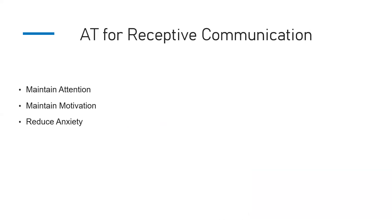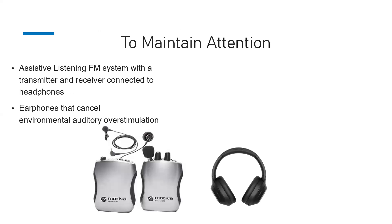Now moving to receptive communication — how to maintain attention, retain motivation, and reduce anxiety. To maintain attention, it's important to understand that environmental sounds can be a distraction. An FM system, with a receiver and a transmitter, can help: the person receiving information wears the receiver, and the person talking wears the transmitter, so the voice goes directly to the listener's ears and environmental noise and crowdedness that can distract are eliminated.